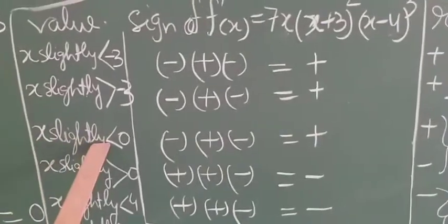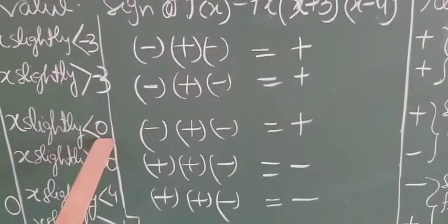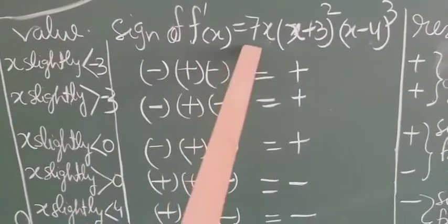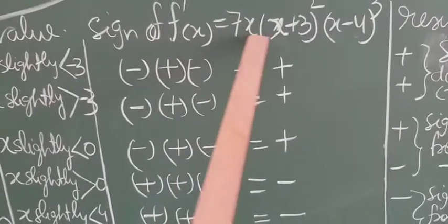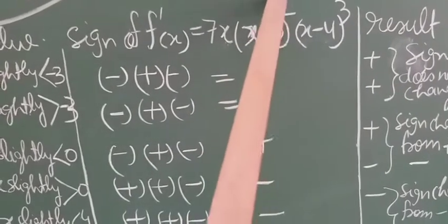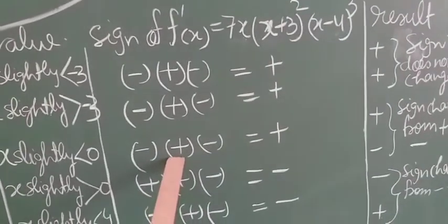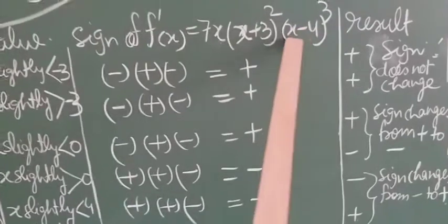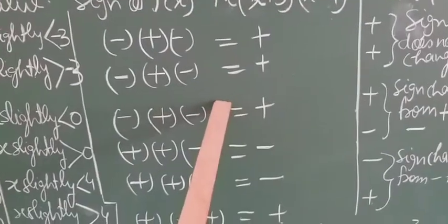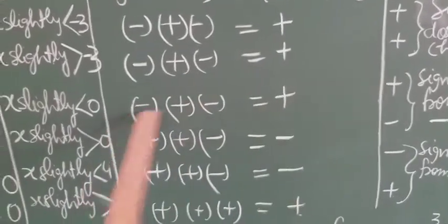Now the second critical point is x = 0. Putting x slightly less than 0, say −0.1, in f'(x): in 7x it is negative, in (x+3)² it is positive (square always positive), and in (x−4)³ it is negative. So minus × plus × minus = positive. The overall sign is positive.